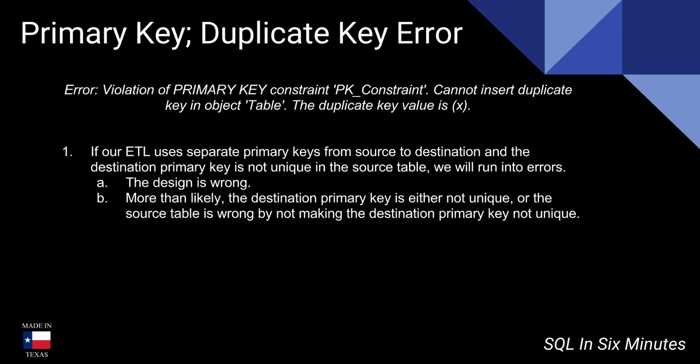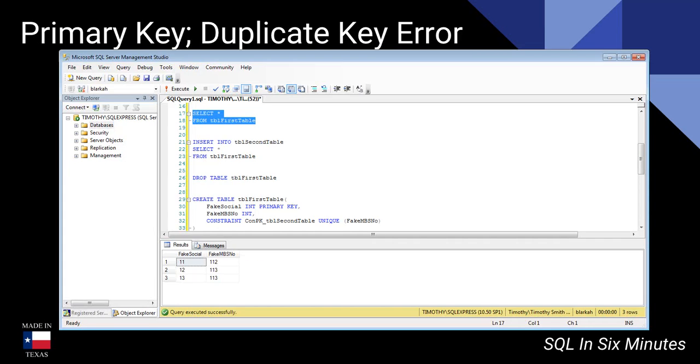I've seen this a lot in ETL processes, and I think it comes from people not fully understanding relational databases. You have a source table that uses one primary key and a destination table that uses another, and data is flowing between them. I'm not sure why you would design things that way — the design is wrong — but let's assume there's some legitimate reason and demo this.